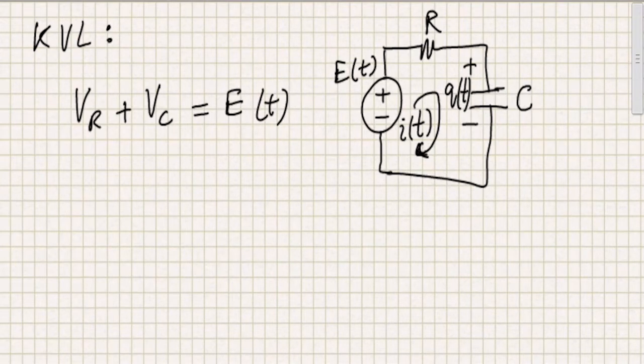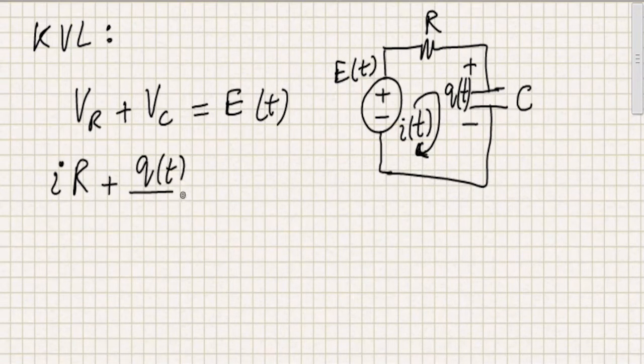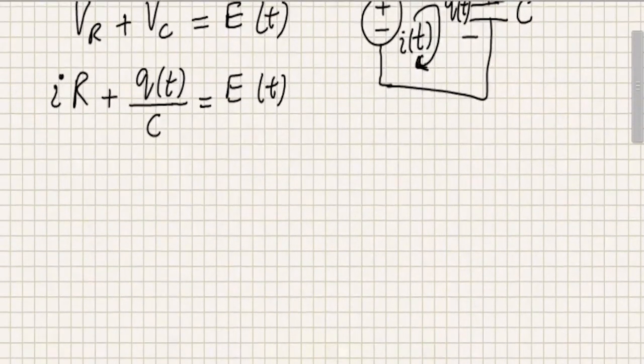The voltage across the resistor plus the voltage across the capacitor equals to the electromotive force or the EMF source. So V_R can be translated to current using the Ohm's law, IR, and the capacitor voltage can be translated to the charge, which is a function of time, divided by the capacitance, C. And E of T can be written just like this over here, unless it is known, there's a value of it.